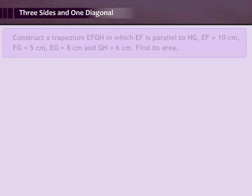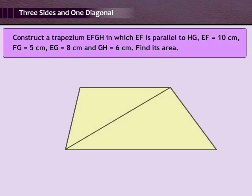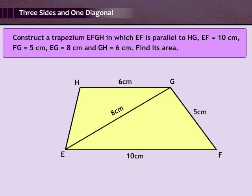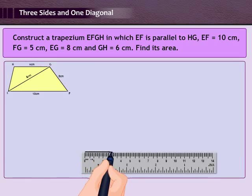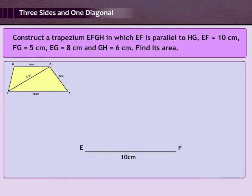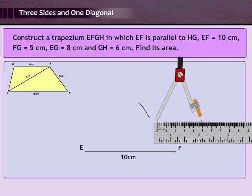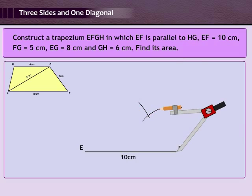Let us first construct a trapezium where three sides and one diagonal are given. Construct trapezium EFGH in which EF is parallel to HG, EF equal to 10 cm, FG equal to 5 cm, EG equal to 8 cm, and GH equal to 6 cm. Also find its area. Step 1: Draw a rough diagram. Step 2: Draw line segment EF equal to 10 cm as baseline. Step 3: With E and F as centres, draw arcs of radii 8 cm and 5 cm respectively and let them cut at G.